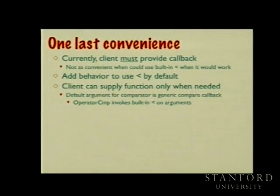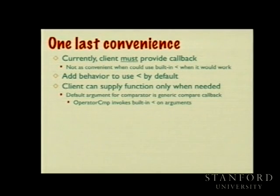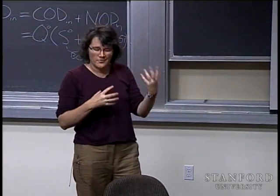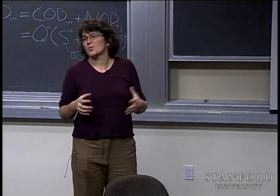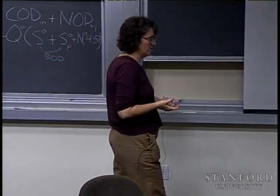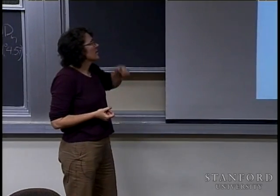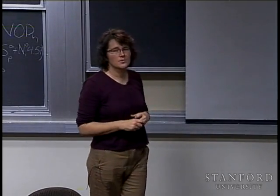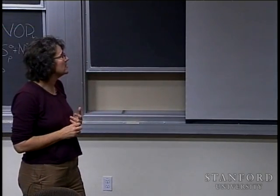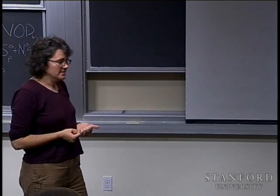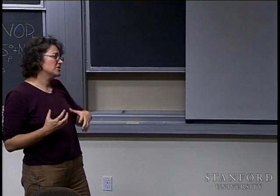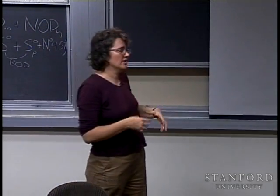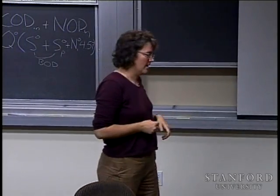Now I'm going to make it more convenient. Right now the function always requires two parameters: a vector and a comparison callback. Before I added the comparison function, it used to work by default for ints, doubles, and strings that already operated correctly with less-than. So I'm going to add a default behavior: if you don't specify otherwise and the default less-than would work for you, we'll use that — getting back the original convenience of just saying 'sort a vector of numbers' without having to build a compareInt function.